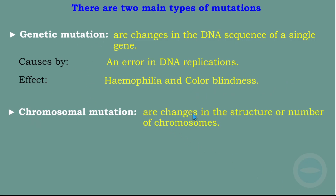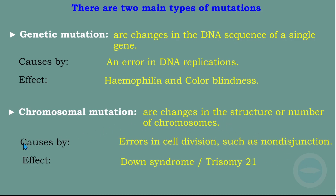Chromosomal mutations are changes in the structure or number of chromosomes. We learned about non-disjunction in meiosis. Chromosomal mutation is caused by error in cell division, such as non-disjunction — when two chromosomes fail to separate. The effect of chromosomal mutation is Down syndrome, or trisomy 21, which is when a person's karyotype has 47 chromosomes instead of 46.